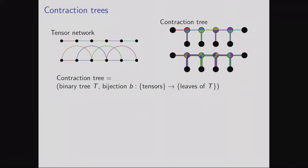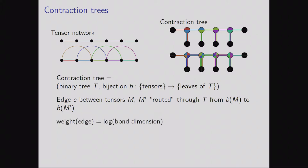Here are two example tensor networks in one dimension, one with nearest neighbor edges and another with next nearest neighbor edges. On the right are the corresponding contraction trees. A contraction tree is a binary tree whose non-leaf edges have degree three and a bijection between the tensors of our network and the leaves of the tree. For every edge in our tensor network, there are two adjacent tensors corresponding to two leaves of the tree. What we do is route this edge through the contraction tree along the unique path connecting the two relevant leaves. It'll be more useful to think about weights as being equal to the logarithm of the bond dimension so that they add rather than multiply.